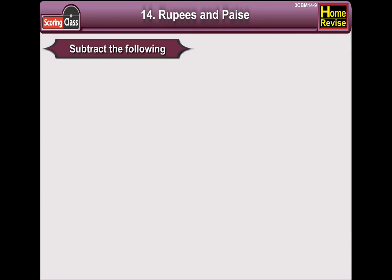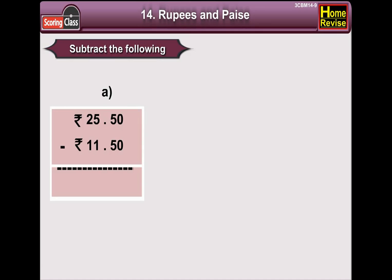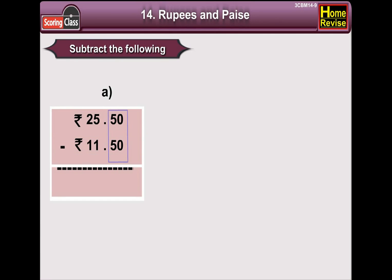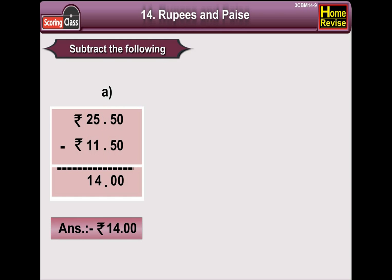Subtract the following. A: Rupees 25, 50 paisa minus rupees 11, 50 paisa. Now, 0 minus 0 is 0, 5 minus 5 is 0. In the rupees column, 5 minus 1 is 4, 2 minus 1 is 1. So the answer is rupees 14.